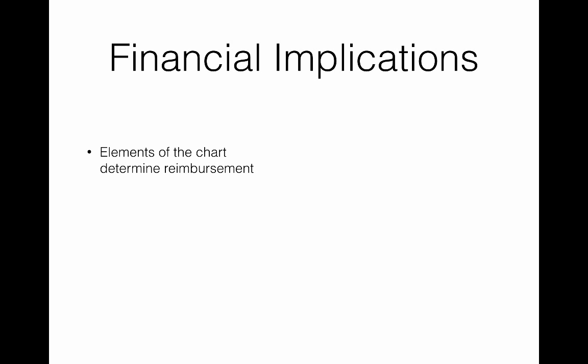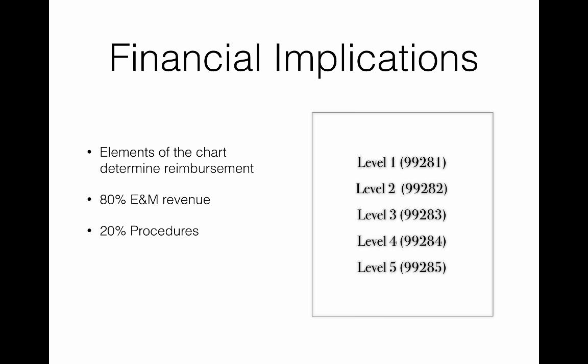A quick review again — we spent some time in the last module talking about financial implications. Remember that the elements of the chart, for the most part, determine reimbursement. About 80% of emergency medicine revenue comes from E&M — evaluation and management — level of service codes. About 10% to 20% is going to come from procedures. And remember, there are five E&M levels: level one is the most basic, level five is the most complex. There are also critical care codes on top of that.